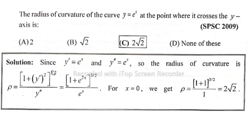Solution: First, differentiate. y prime equals e to the power x. Again, differentiate with respect to x. y double prime equals e to the power x. So the radius of curvature is rho equals.